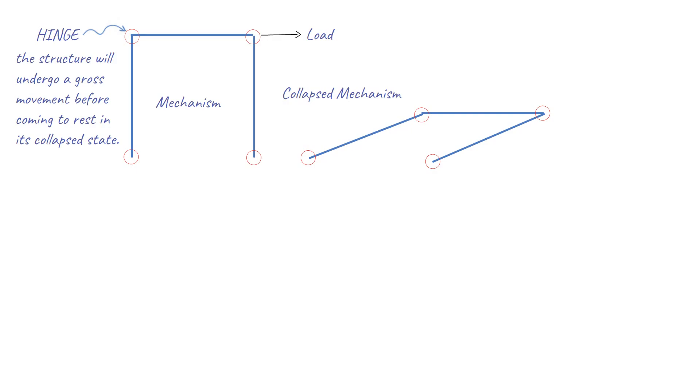For structures to collapse, they have to become mechanisms. This can happen suddenly or gradually.